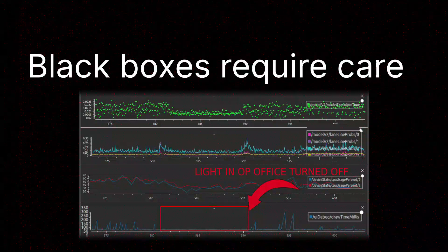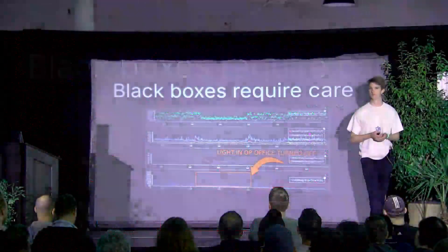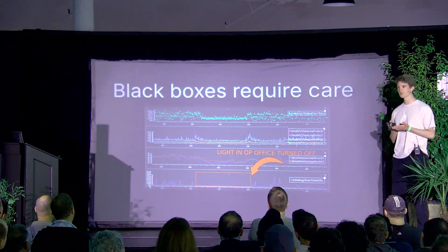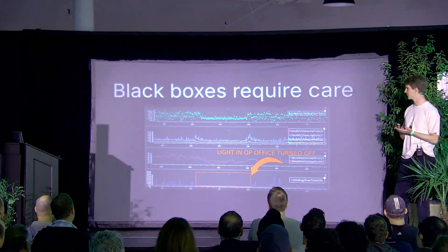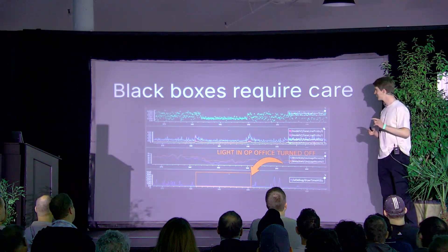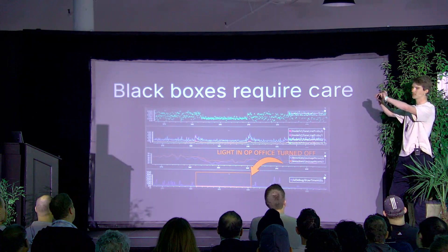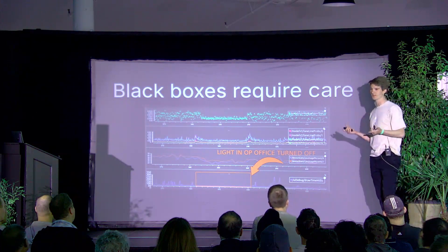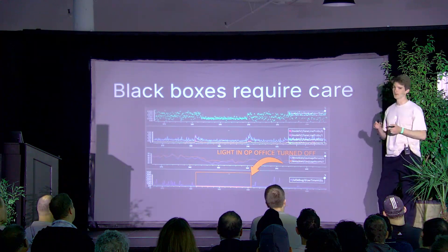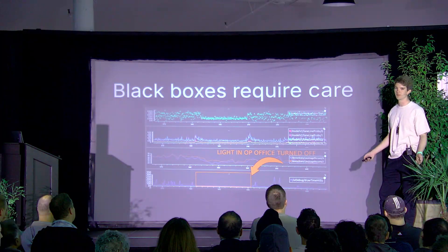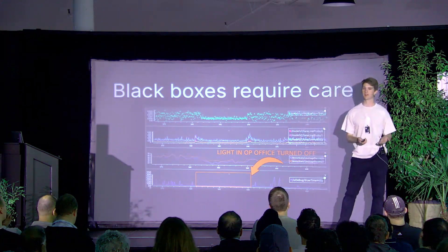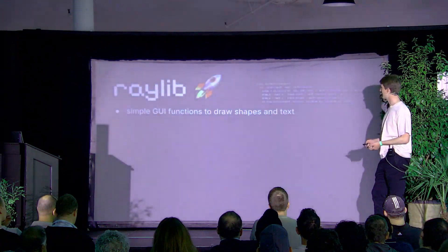Black boxes require care. Another issue: one day the Jenkins hardware-in-the-loop test just started failing out of nowhere for high UI timings — some frames were taking up to 300 milliseconds to render, where they should normally be under 10 or 20. While I was debugging this issue live, the lights in the openpilot office turned off, and the timings spiked. What was actually happening: the Comma 3X was pointed at the wall, basically seeing light or dark. When the light turned off, it output lane line geometries that the polygon renderer couldn't convert into a triangle strip for the GPU. It silently switched to an entirely different code path without telling you, and that took a while to figure out.